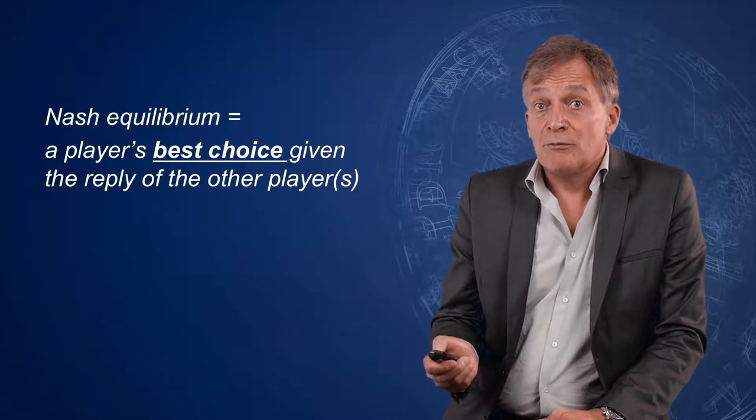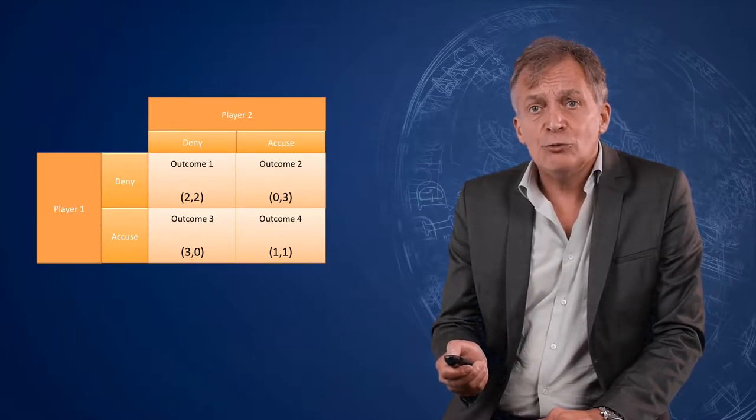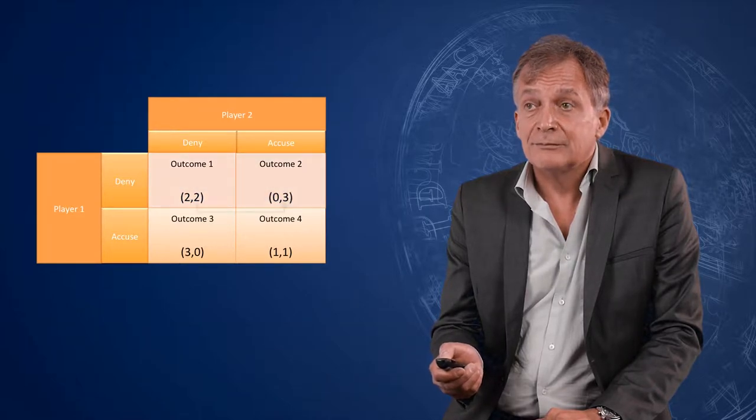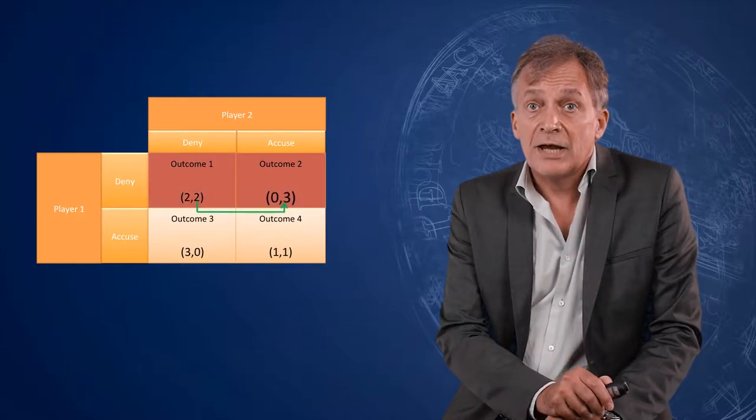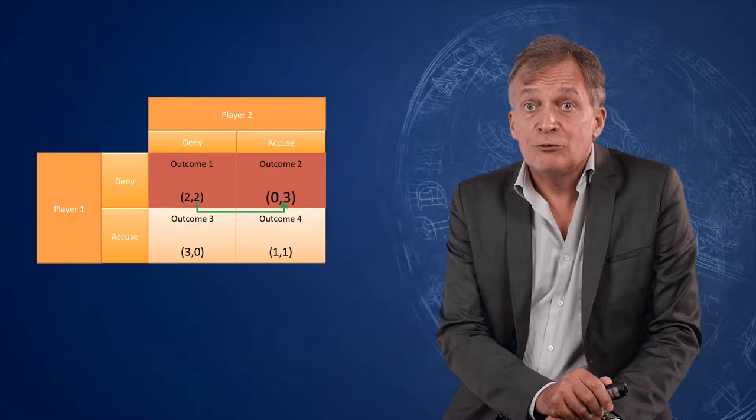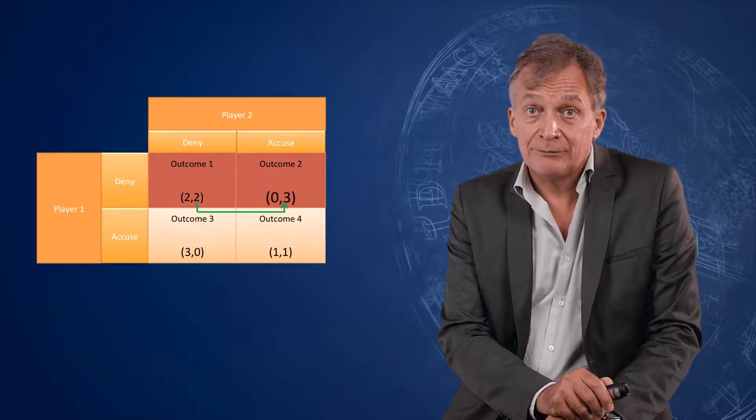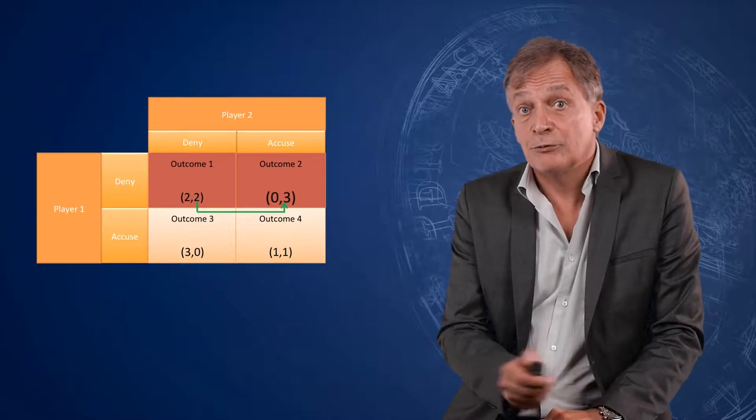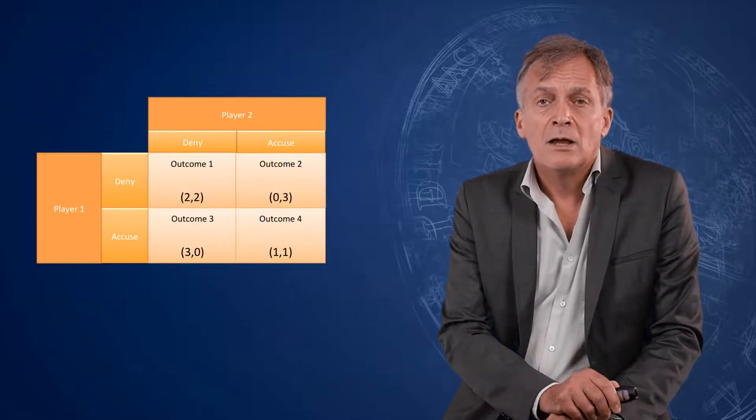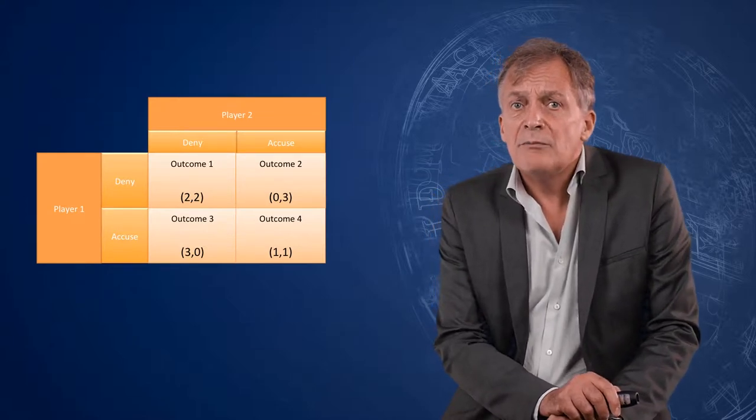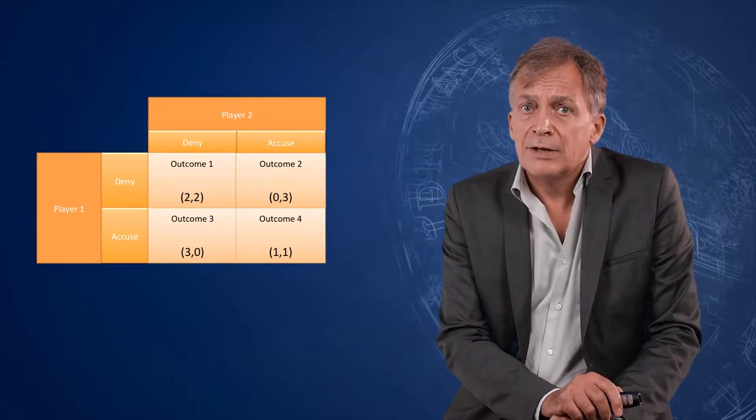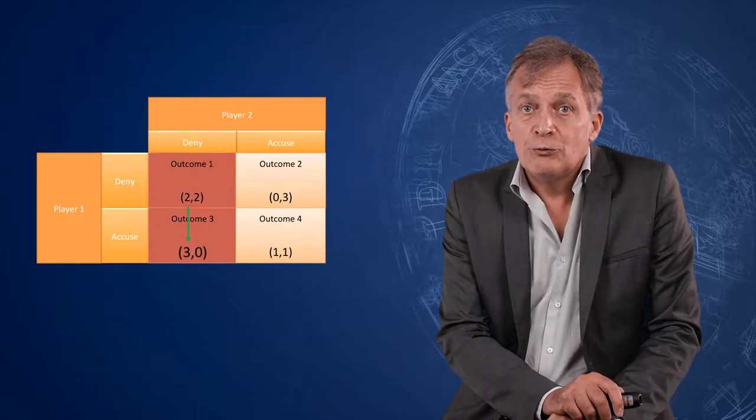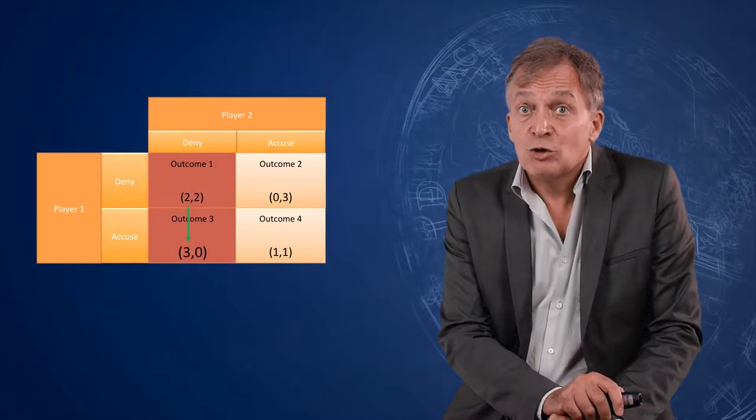Going back to our matrix, player two wants to change if player one plays deny. In that case, accusing one would get two off the hook and makes one go to jail. This provides two with the higher payoff of three, while one gets a lower payoff of zero. However, player one makes a similar assessment when player two plays deny. Accusing two would get one off the hook and make two go to jail.